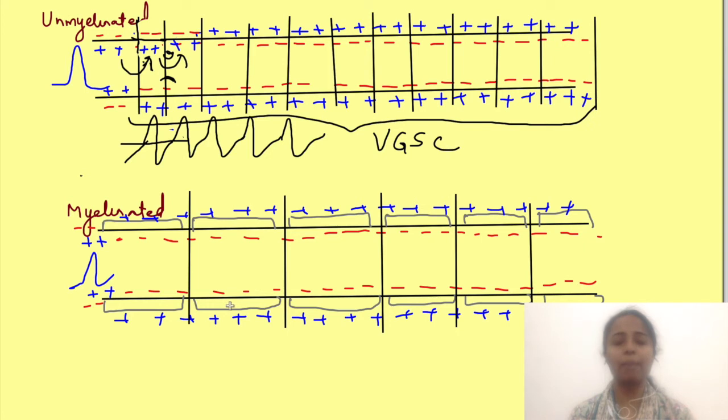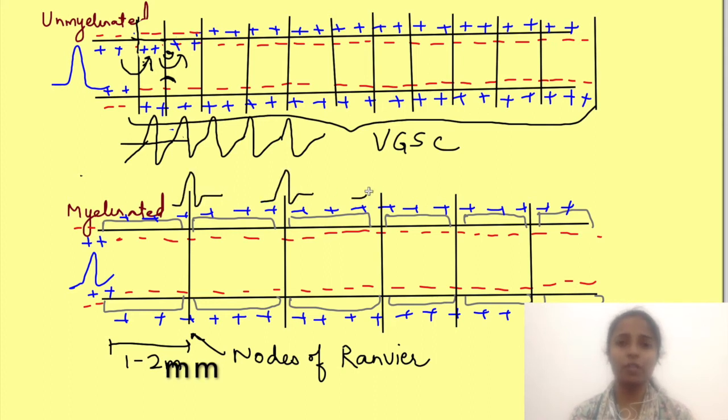However this doesn't happen in a myelinated neuron. A myelinated axon is covered with myelin which is interrupted every 1 to 2 mm length and these interruptions are known as nodes of Ranvier which have high density of voltage gated channels. So in myelinated neuron action potential regenerates only at nodes of Ranvier. So potential loss will occur in the myelinated region isn't it? Then is this good or bad?